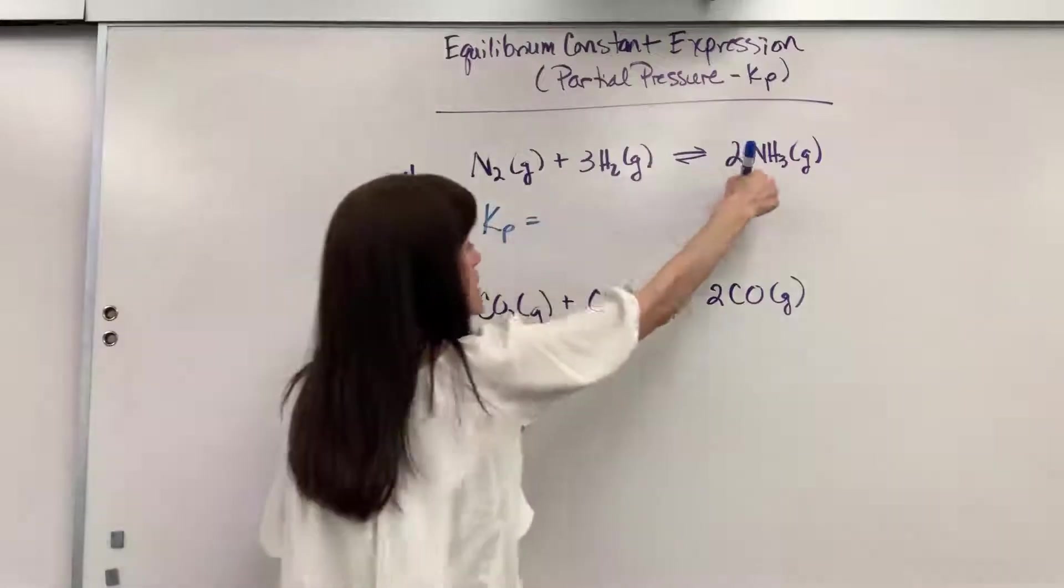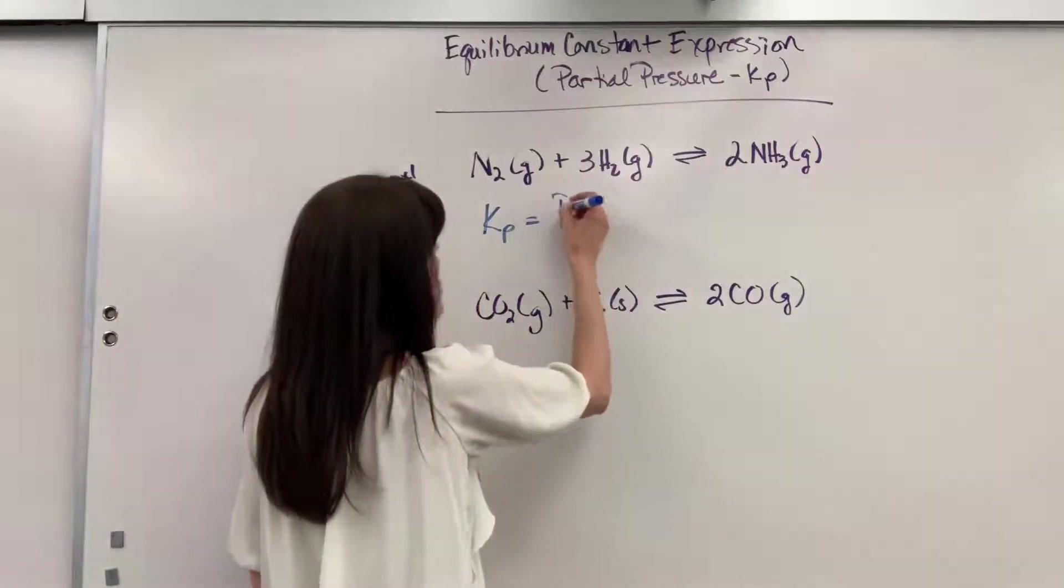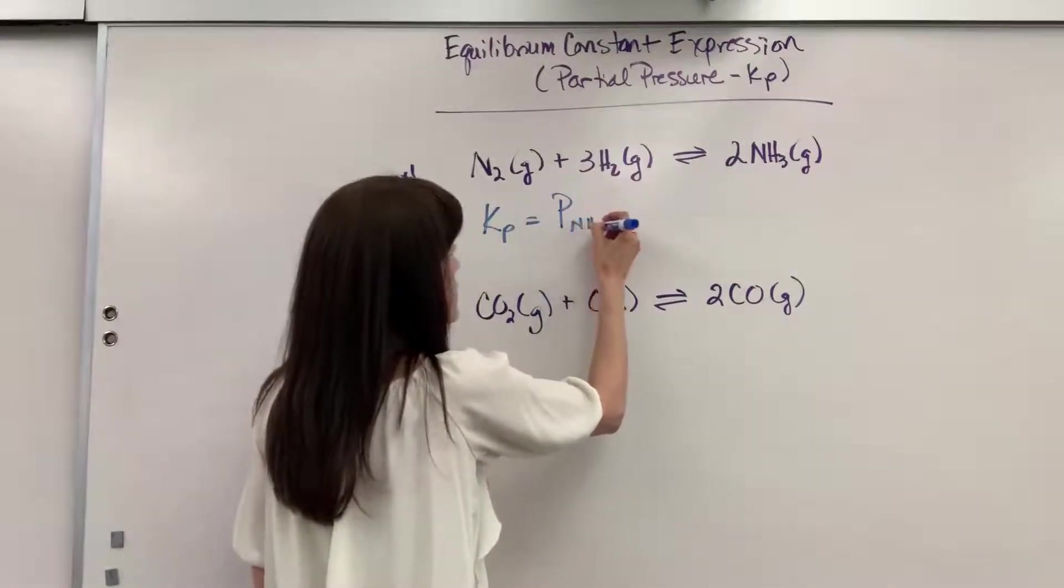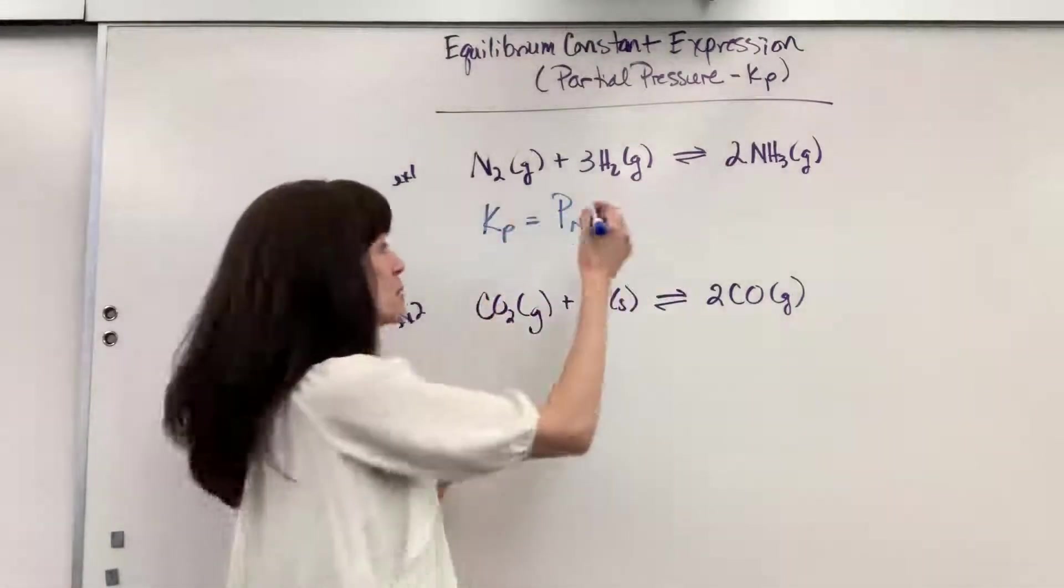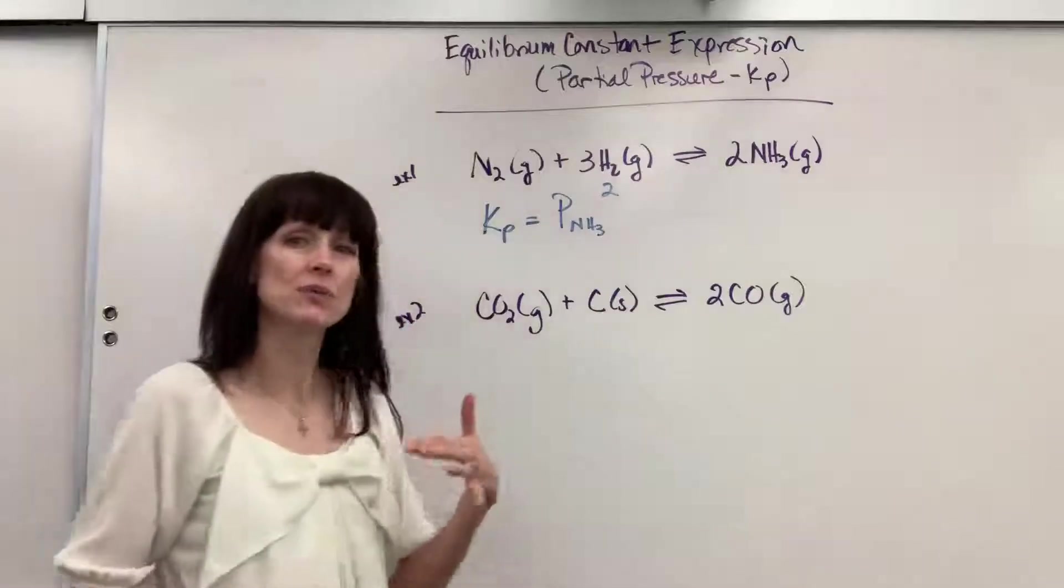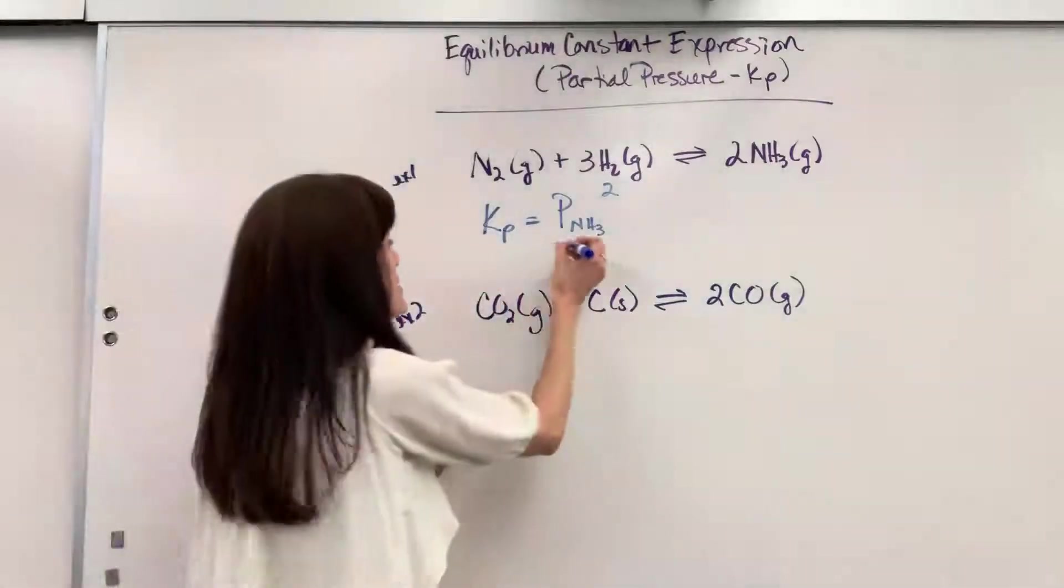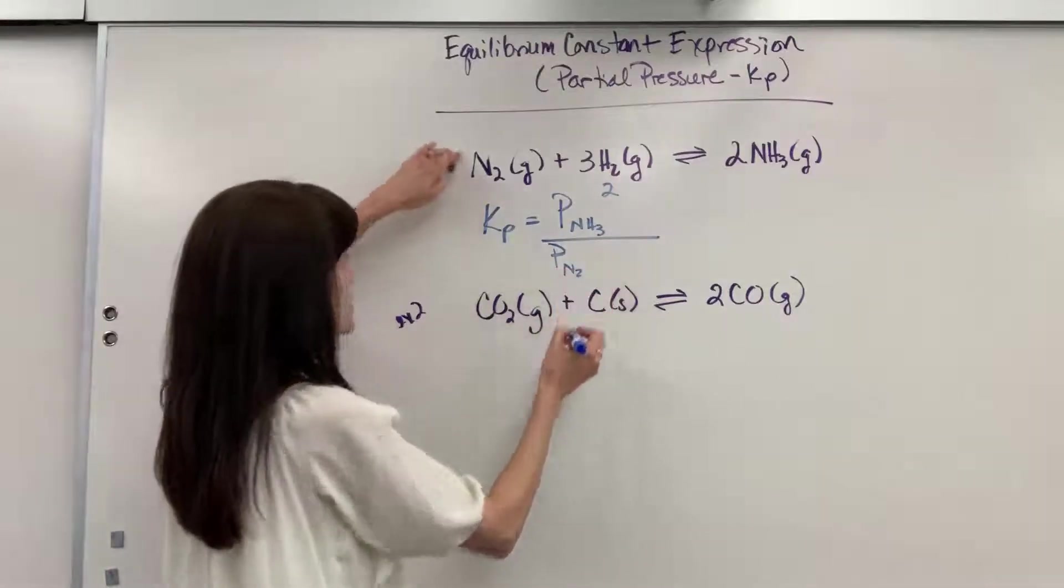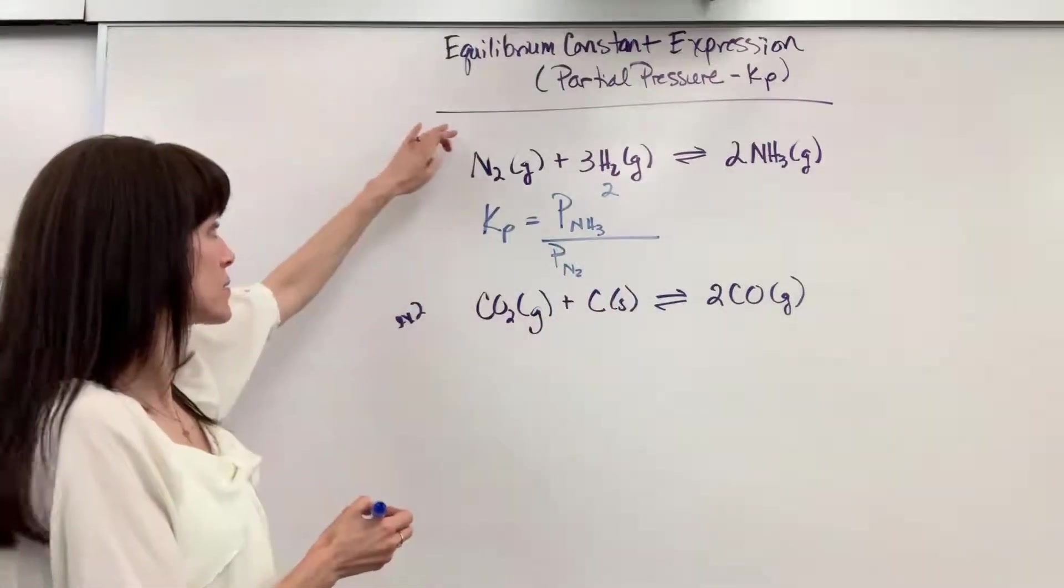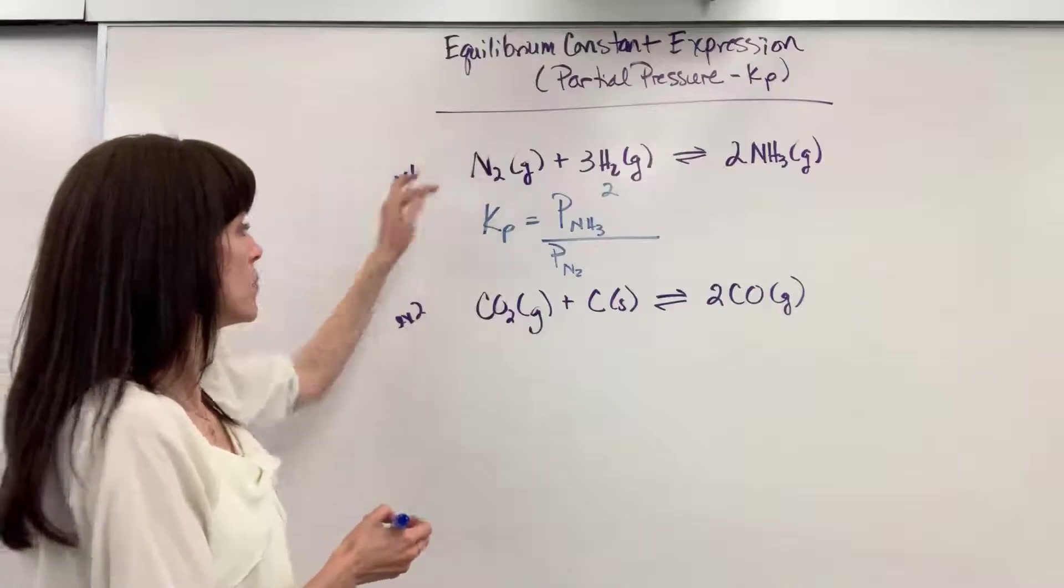So this is going to be products. I'm going to have my partial pressure of ammonia, and that coefficient is the exponent, so it's going to be squared. That's partial pressure of ammonia squared, divided by the partial pressure of nitrogen. That's to the first power, it's going to be understood to be a 1.